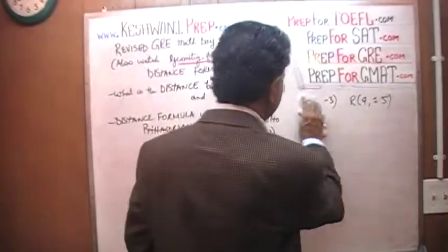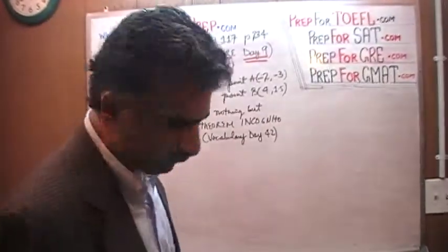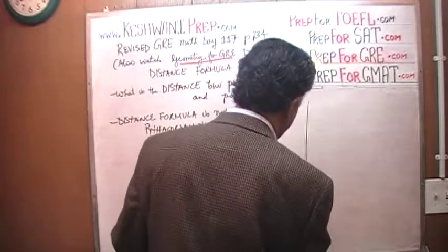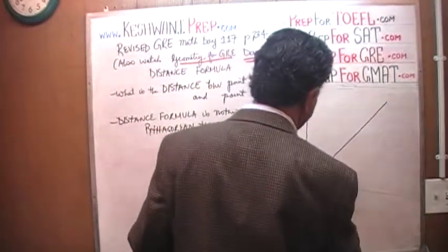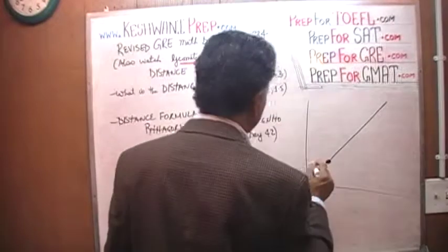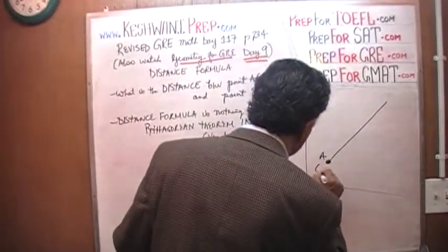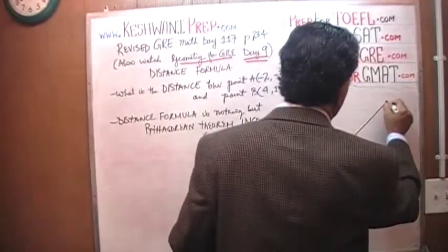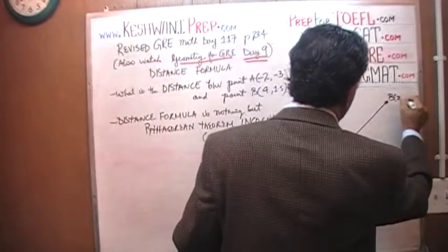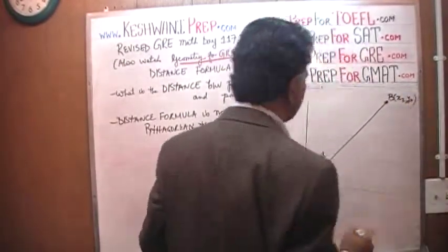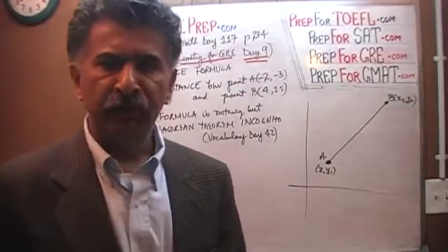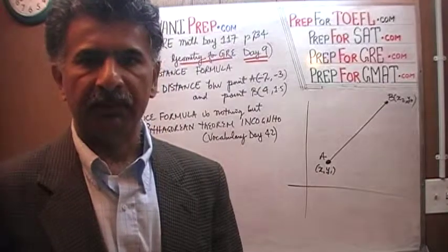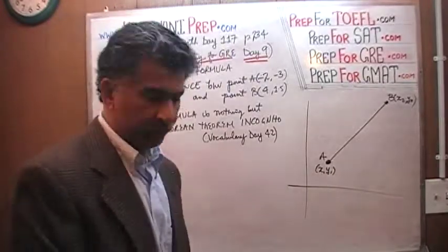We're going to draw two points in the Cartesian coordinates and see what the formula boils down to. Let's say my two points are here. This is the first point — let's call it point A with coordinates x1, y1. And here is point B with coordinates x2, y2. The question is: how do we figure out the distance between these two points? It is a simple application of the Pythagorean theorem.